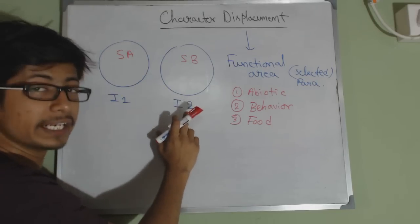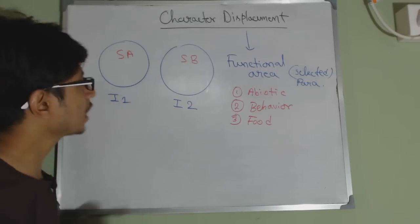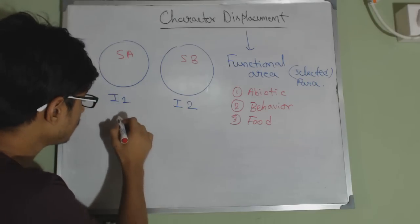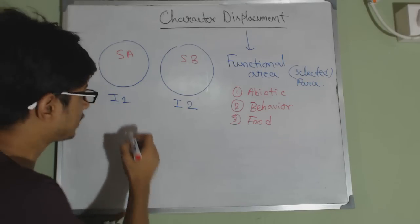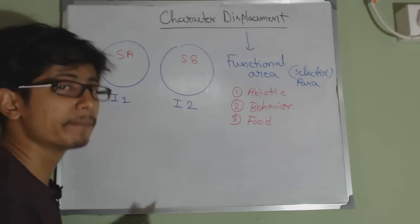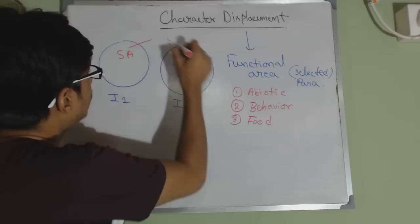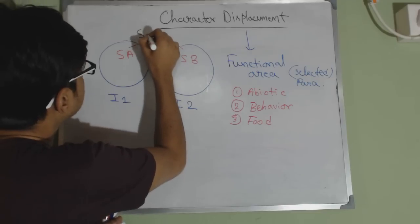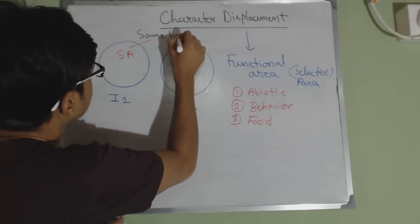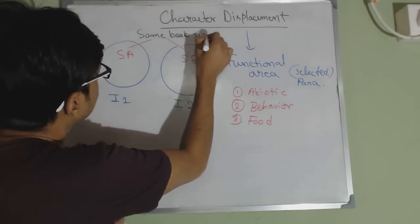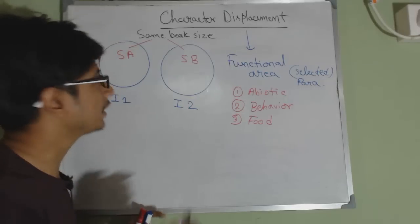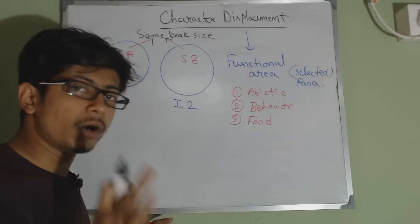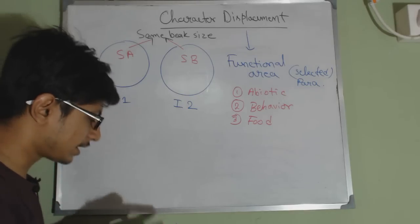If they stay on two different islands — species A on island one, no species B there; species B on island two, no species A there — and we check a graph of their beak size, we find that they have very similar beak sizes on their respective separate islands.